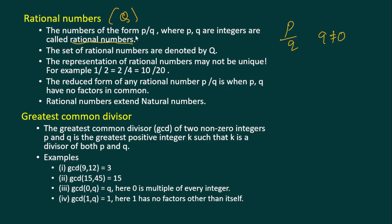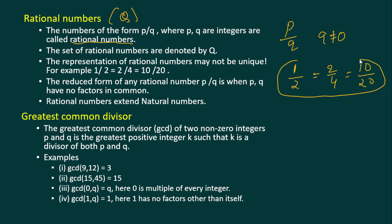The representation of a rational number may not be unique. For example, one-half equals two-fourths equals ten-twentieths — all three represent the same number, so the representation can be different. The reduced form of a rational number p by q is when p and q have no common factor.